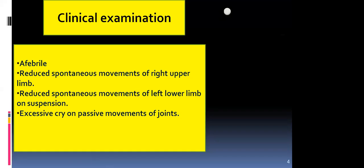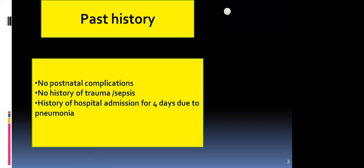This was a normally delivered child, discharged home the next day with good birth weight. There were no postnatal complications requiring NICU admission, and the mother's pregnancy was uneventful with no umbilical cord sepsis. The child presented at two months with reduced movement of the right upper limb and left lower limb — two sides involved. Clinically, the child was very irritable.